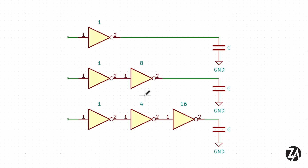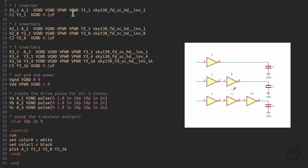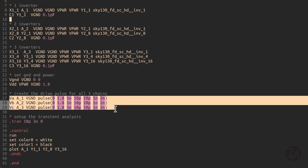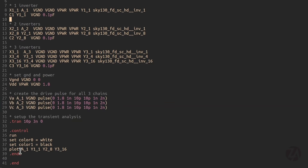Let's do a quick experiment to simulate and verify this. It's based on one from the Harris book, which I highly recommend. The question is: which of these circuits drives faster? The capacitors at the end represent the inputs of some load we're driving. We compare a drive-strength-1 inverter, a 1 followed by an 8, and a 1 then 4 then 16. Before reading this I always thought the single inverter would be fastest. The SPICE deck has the single inverter with capacitor load, then the two-inverter chain, and the three-inverter chain, all given the same input.